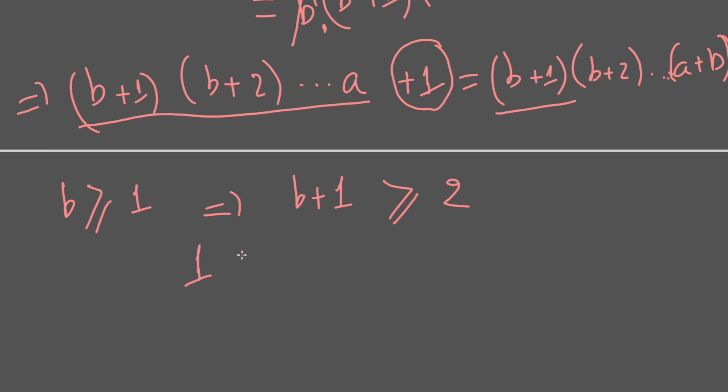So as a result, 1 would have to be divided by b+1, but we proved that 1 cannot be divided by b+1 because b+1 is greater than or equal to 2. So that is impossible. It means this is an impossible equation.